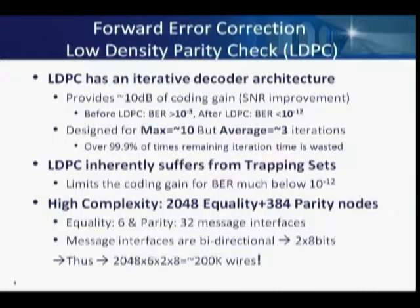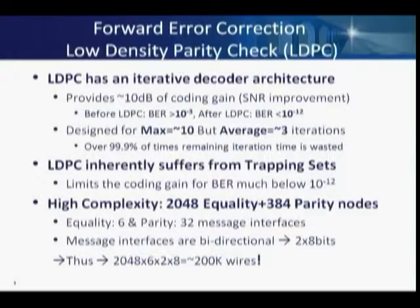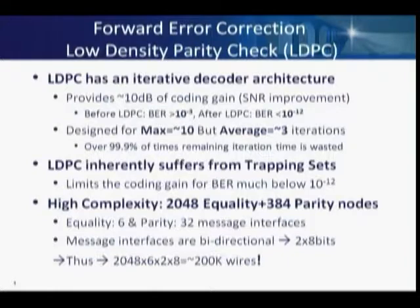LDPC code structures are inherently flawed in that they have trapping sets — specific code words that are always undecodable — though the probability is small, which is why you still achieve better than 10^-12 bit error rates. We have a technique to detect and correct them. Given 2048 equality and 384 parity nodes, if you do the math on wires and resolution needed, you'll need about 200,000 wires for message passing, making a pure parallel implementation impractical.